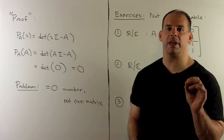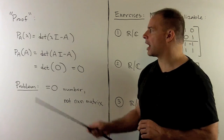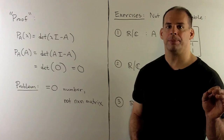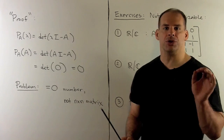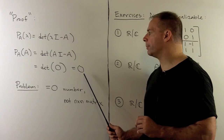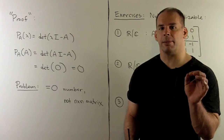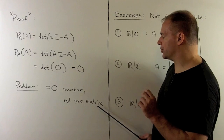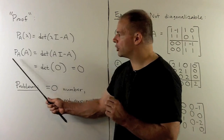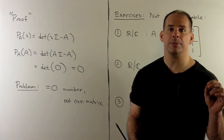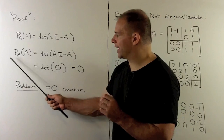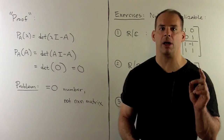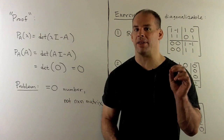It's worth noting an obvious false proof of Cayley-Hamilton. The characteristic polynomial of A is the determinant of lambda I minus A, so why not substitute A for lambda? Then we have the determinant of A minus A, which equals the determinant of the zero matrix, which equals zero. The problem is that this is the wrong statement — what comes out is the number zero, not the n-by-n zero matrix. The shorthand used in that substitution is not what Cayley-Hamilton uses; Cayley-Hamilton uses a matrix polynomial, borrowing the coefficients from the characteristic polynomial, and the constant term must be multiplied by the identity matrix.